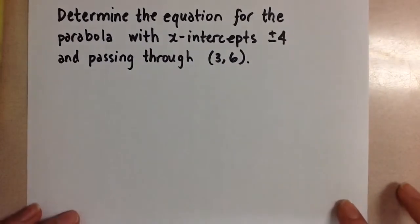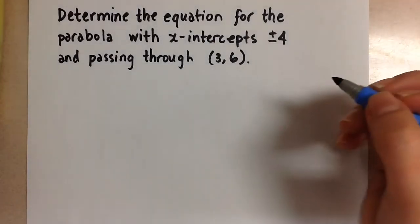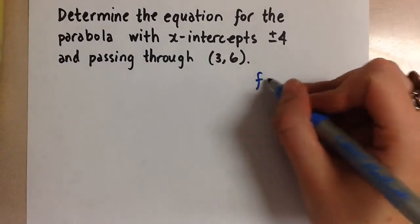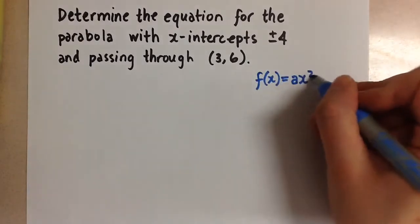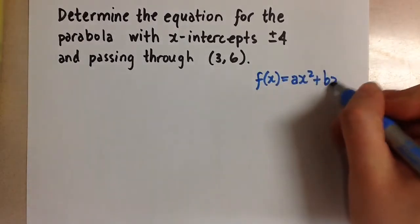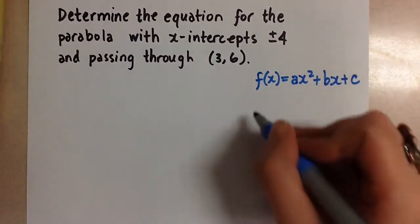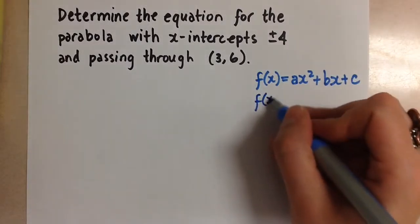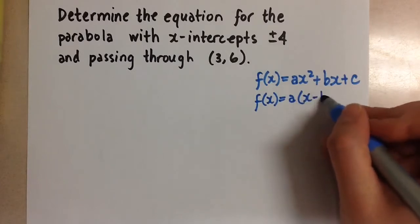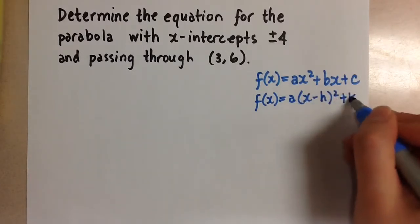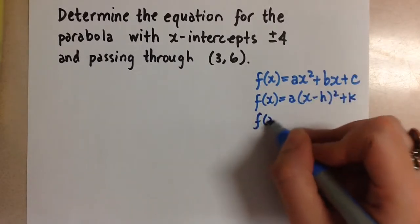Now whenever we're finding the equation of a parabola, we need to figure out and choose which form of the equation we want to use. So we have the standard form for the equation of a parabola, and then we have the vertex form, and we have the factored form.